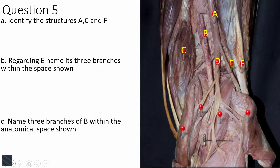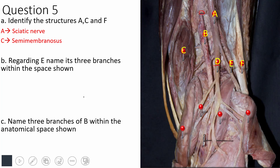The last question shows the popliteal fossa. A is the sciatic nerve and B is the popliteal artery. Note that the popliteal vein has been cut here — ideally, the popliteal artery is the deepest structure. The most superficial content of the popliteal fossa is the tibial nerve, then the vein, and the artery is deepest. C is semimembranosus, with semitendinosus on top of it, and gracilis is also visible there.